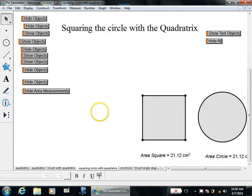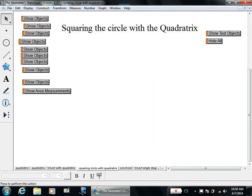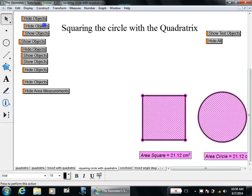Squaring a circle with a quadratrix is much more involved. Here's the circle, here's the square that has the same area. Let's see how this picture was created.